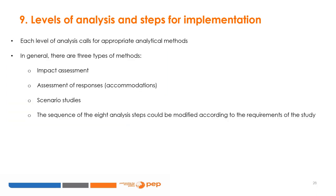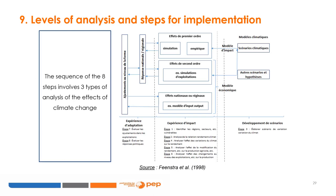It should be noted that each level of analysis calls for appropriate analytical methods. In general, there are three types of methods: impact assessment, assessment of responses or accommodation, and scenario studies. The sequence of the eight steps involves three types of analysis: steps one to six (except step three) refer to impact experiments; step three refers to scenario development; and steps seven and eight refer to adaptation experiments.